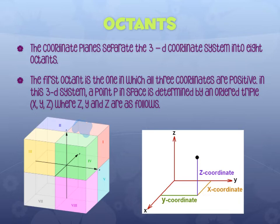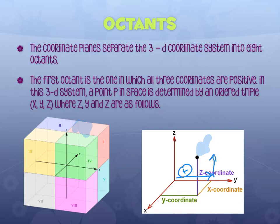The first octant is the one in which all three coordinates are positive — moving right, up, and forward. A point P in space is determined by the ordered triple (x, y, z), and the numbers go in that order. If you're moving right, up, or forward, it's positive; if you're moving left, back, or down, it's negative.